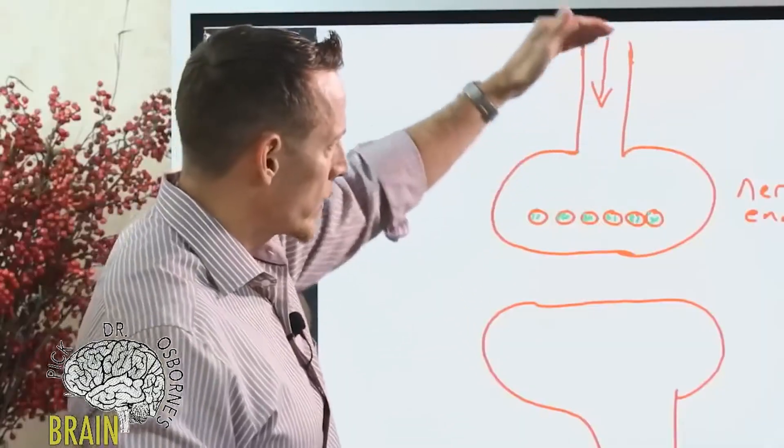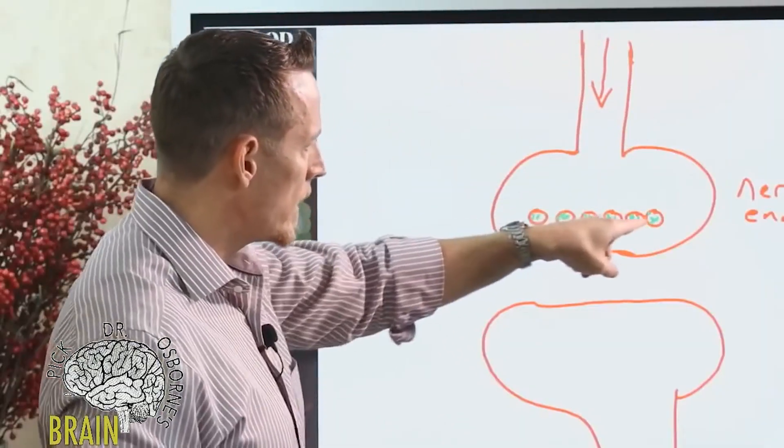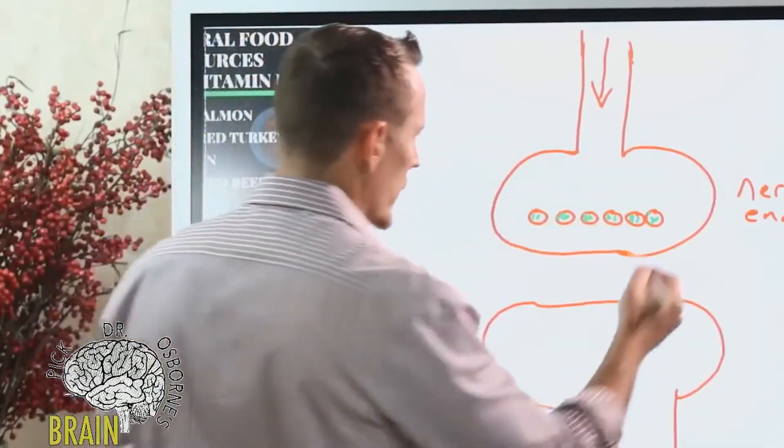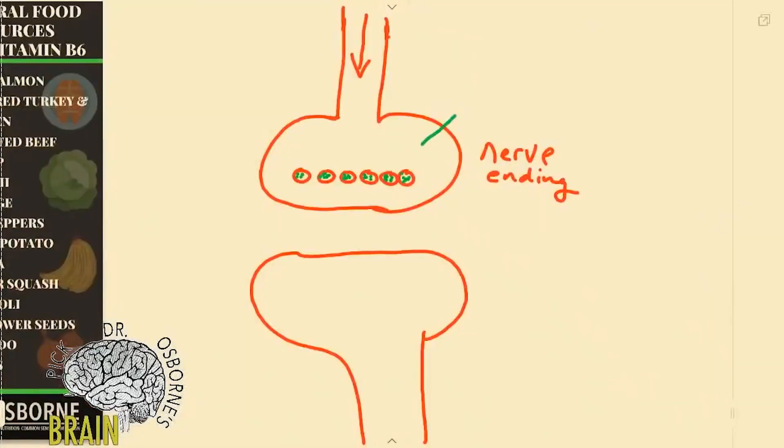What happens is when the nerve message depolarizes or the electrical impulse hits these little areas, there's a gate right here called a calcium channel. So any of you on calcium channel blockers pay close attention. This calcium channel has calcium, free floating calcium, floating around out here.